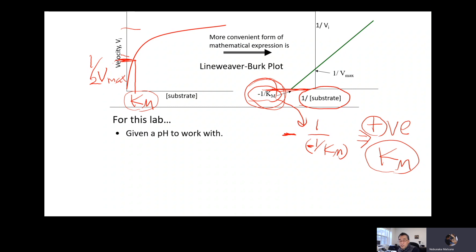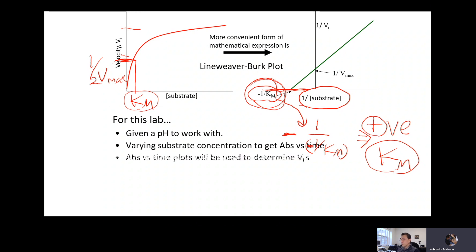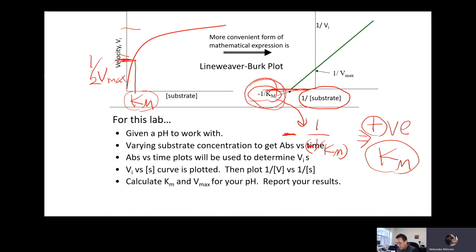Each group will receive an assigned pH, ranging from pH 5.88 through 7.88. You're going to work on a particular pH, and other groups will work on other pHs. Together you'll gather data to find which pH works the best. Meanwhile, you're going to plot a Lineweaver-Burk plot. To do that, you first plot absorbance versus time, then convert to concentration versus time, then calculate Km and Vmax. Everybody will report your Vmax value.